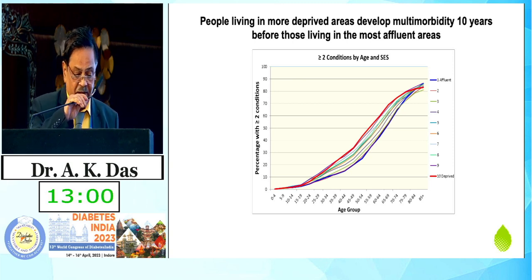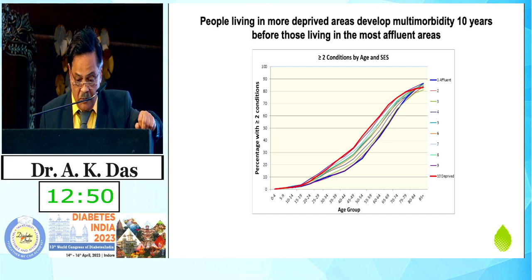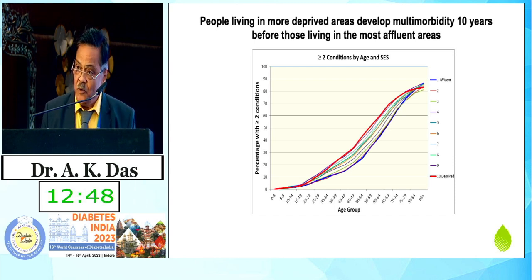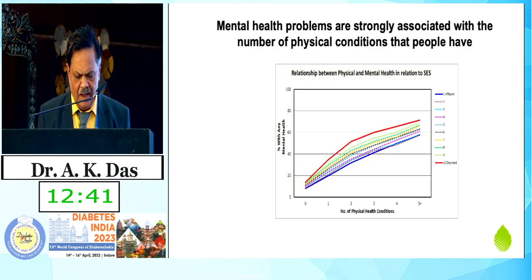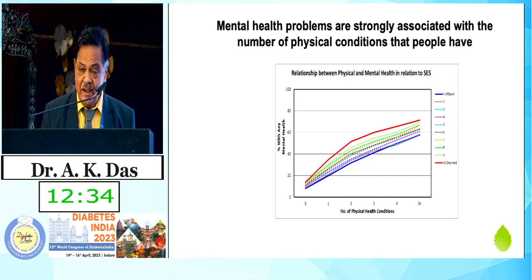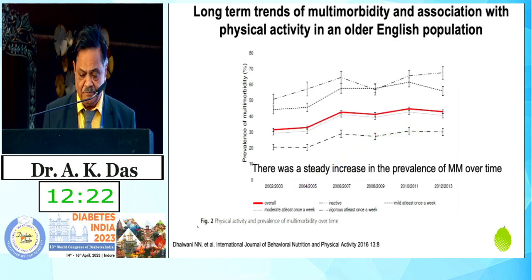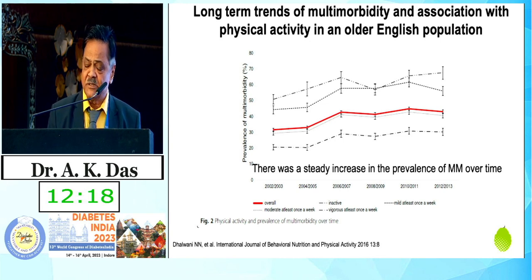It has been shown by various studies that people living in more deprived areas, in any part of the globe, are more prone to multimorbidity — they develop it 10 years earlier than those living in the most affluent areas. This is a very important piece of evidence: mental health problems are associated with the number of physical conditions that people have. If you have multiple physical comorbidities, mental comorbidities do occur. This is a very important piece of information.